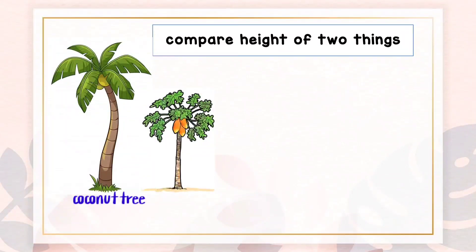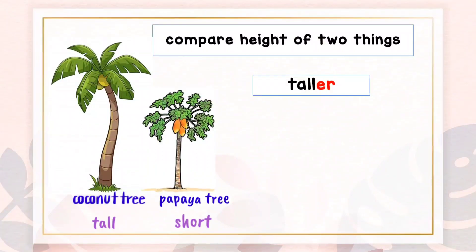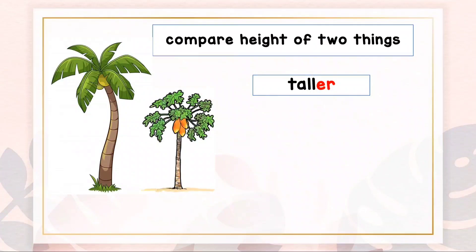This is a coconut tree, and this is a papaya tree. The coconut tree is tall, while the papaya tree is short. To compare the height of these two trees, we add -er to the adjective word 'tall' — taller.